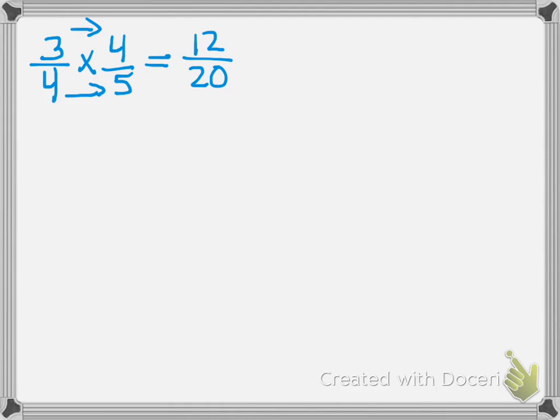Well, yes. I know that 4 goes into both of these numbers. 12 divided by 4 is 3. 20 divided by 4 is 5. I can't reduce it any further. I get 3 fifths as an answer.